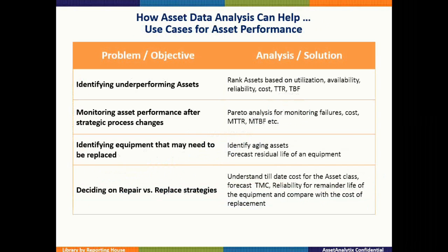Let's look at some of the problems you can actually solve with the help of data analysis that you cannot do directly in the Maximo transaction system. If you want to find out from a performance standpoint which assets are the bad actors — the underperforming assets — you can rank them based on utilization, availability, reliability, cost, time to repair, time between failures, or multiple parameters combined.